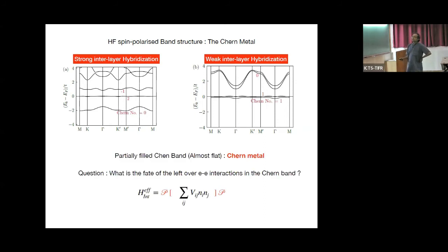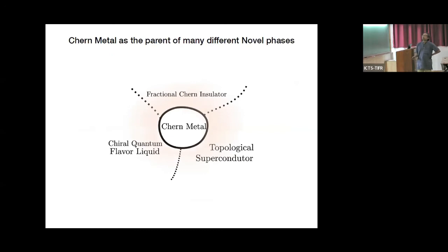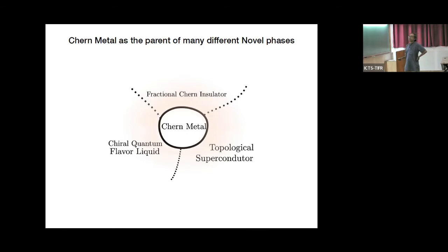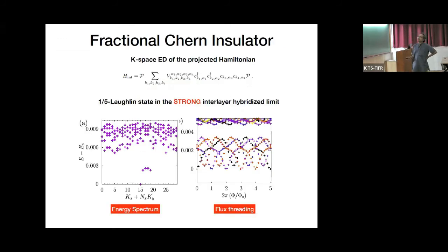The question then is: given this Chern metal with a partially filled Chern band, what is the effect of the leftover interactions projected into the flat band? What we find is that this Chern metal, due to these interactions, can lead to a bunch of very interesting phases including the fractional Chern insulator, the topological superconductor, and what we call the chiral quantum flavor liquid. I'll try to outline all three.